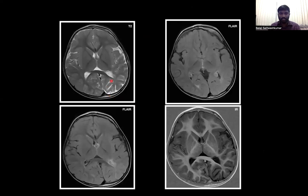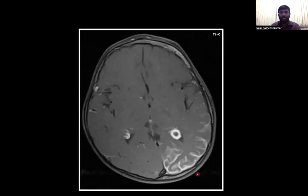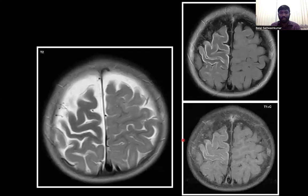Moving on to the next case, here we see prominence of the cortical sulci along with enlargement of the subarachnoid space on T2 image, along with subtle FLAIR hyperintensity along the cortical sulci in the left parieto-occipital lobes, mild thickening of the ipsilateral choroid plexus, and on post-contrast study there is serpentine pial enhancement along the cortical sulci and gyri of the left parieto-occipital lobe with thickened and enhancing ipsilateral choroid plexus, suggestive of Sturge-Weber syndrome. The next case similarly shows prominence of cortical sulci with pial enhancement along the cortical sulci and gyri of the right frontal parietal lobes, suggestive of right-sided hemiatrophy with pial angiomatosis in Sturge-Weber syndrome.